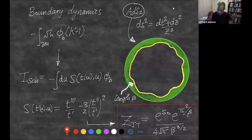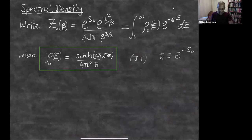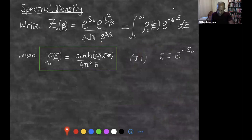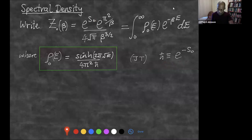I'm going to focus a lot on rewriting this in terms of a spectral density via a Laplace transform. The result, as you probably know, for the spectral density is this nice sinh function — sinh(sqrt(E)) — with some constants. Henceforth I'm going to write this factor as 1/hbar, where this hbar is going to be an hbar in a quantum mechanics problem in a moment.